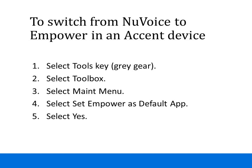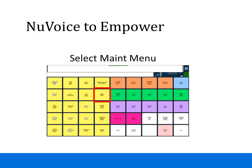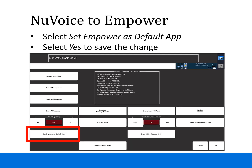We're going to go through each of those steps right now. From your vocabulary, select the Tools key and then select Toolbox. From here, select Maintenance Menu and select Empower as Default App. Then select Yes to save the change.